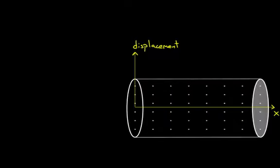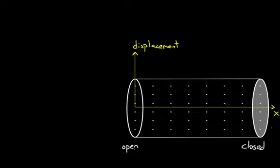Here's a closed end right here. This end is closed. This is more like a soda bottle, because this end would be open — the top that you drink out of — and the bottom is closed off. We've got air inside. If you blow over the top, what possible wavelengths could you set up? We know that the open side — this air molecule — can oscillate wildly. That's going to be an anti-node.